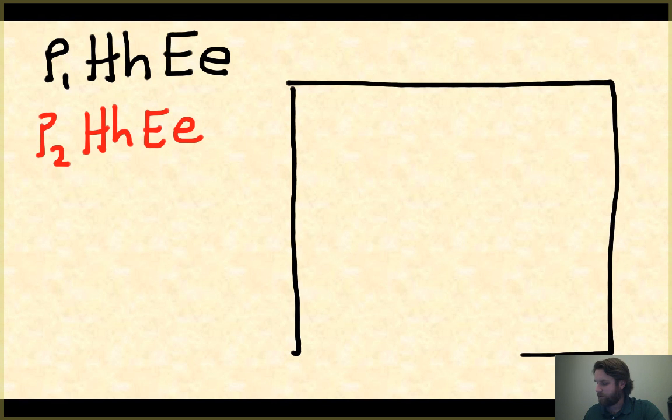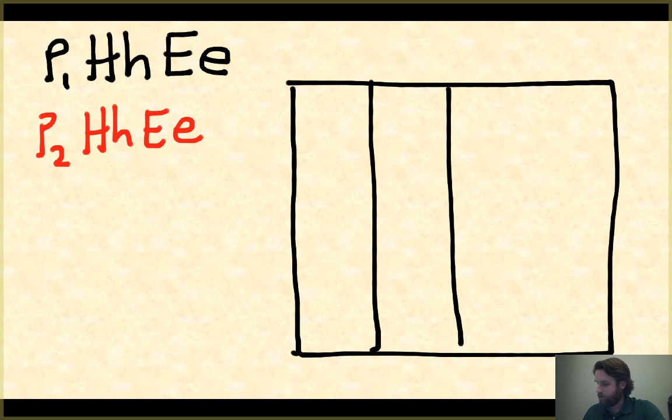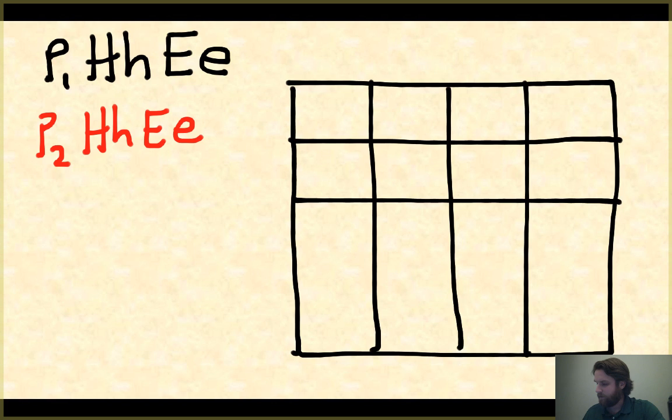Since I'm looking at two genes, I'm not going to have a simple 4 Punnett square. It's going to turn out to be 16. So let me draw this whole thing out here. We're going to have 16 squares, 4 by 4, and then we're going to fill in our gametes on the top row and on the left hand side as well.